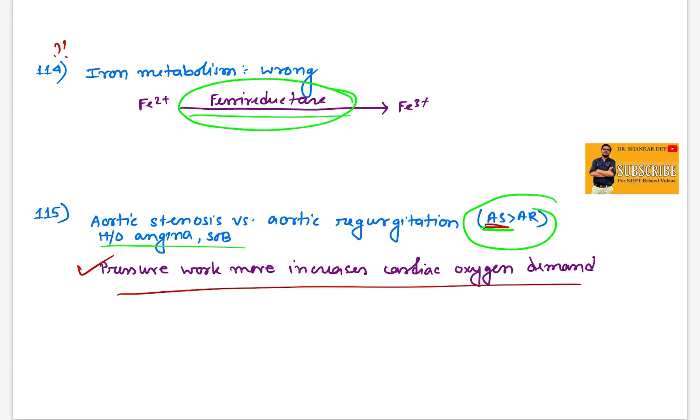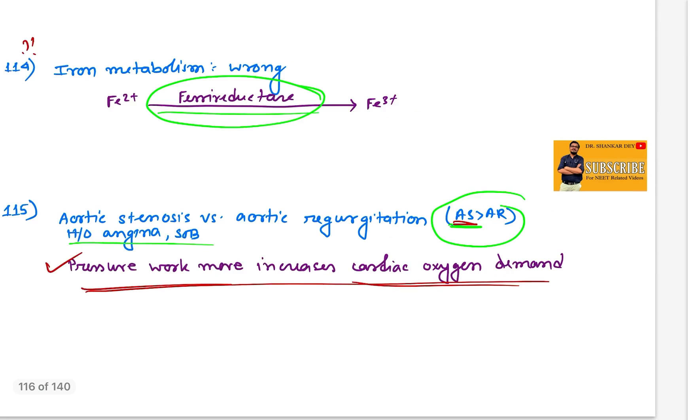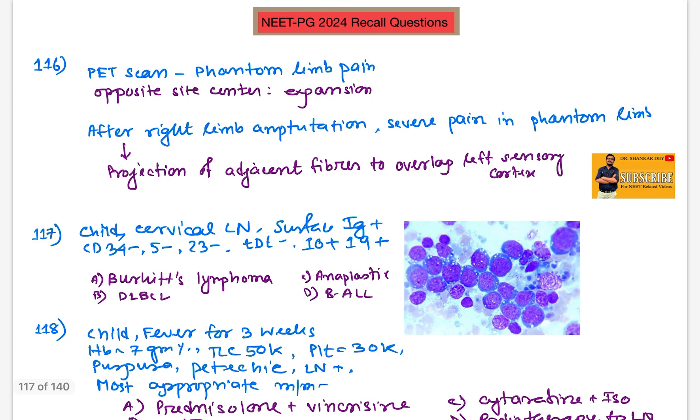Question 115: One patient with angina shortness of breath, which point favors the diagnosis of AS rather than AR? In AS, the pressure work increases with cardiac oxygen demand, so cardiac oxygen demand is proportional to pressure work.